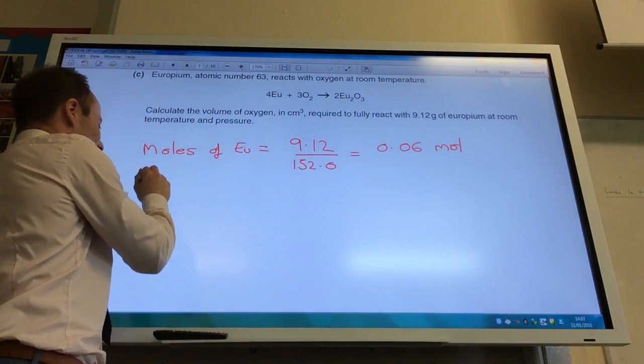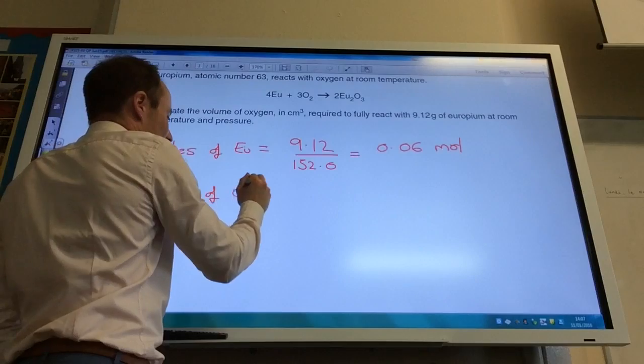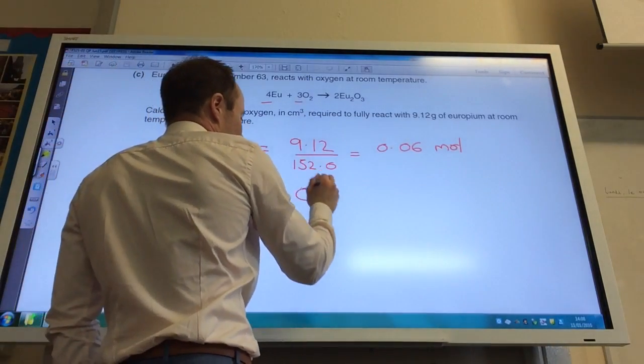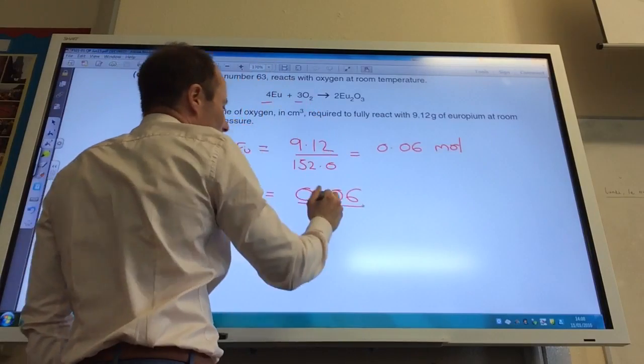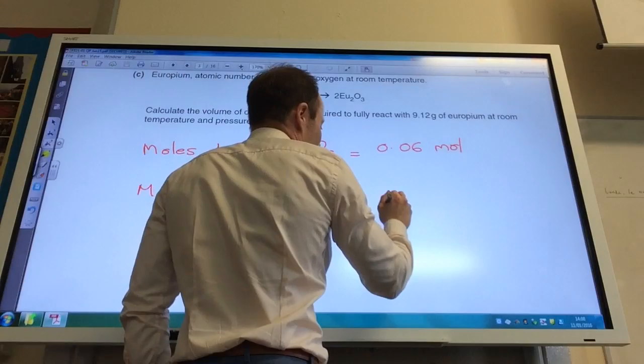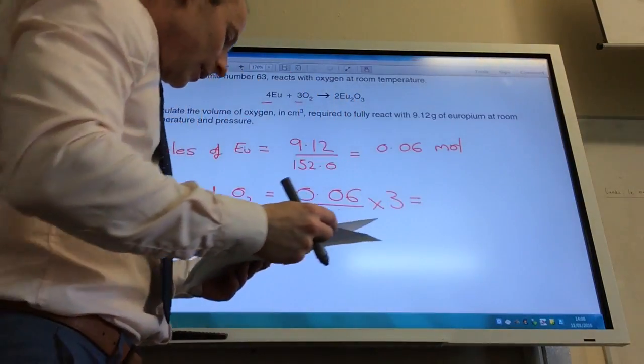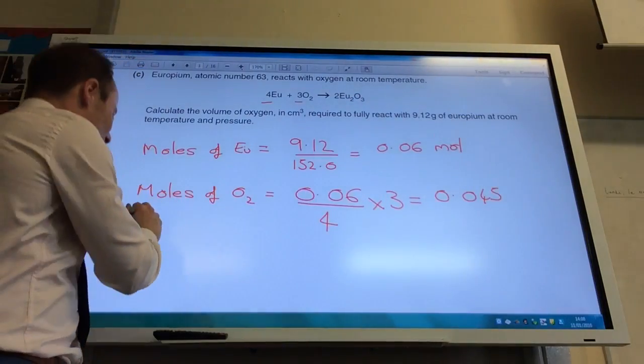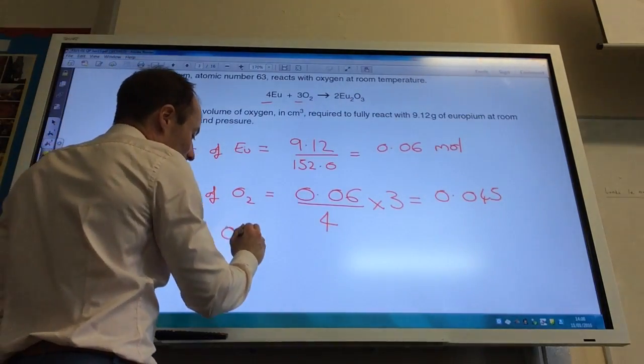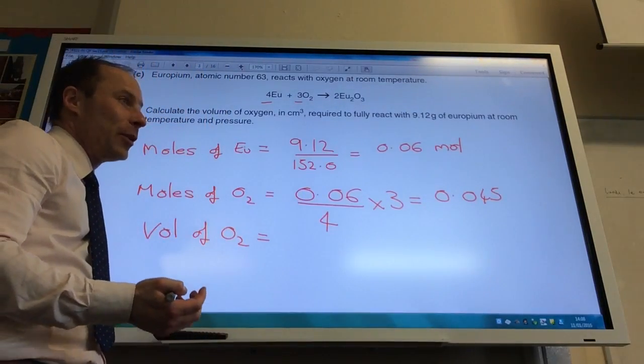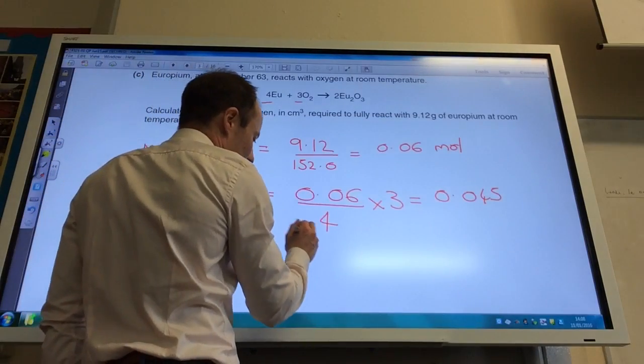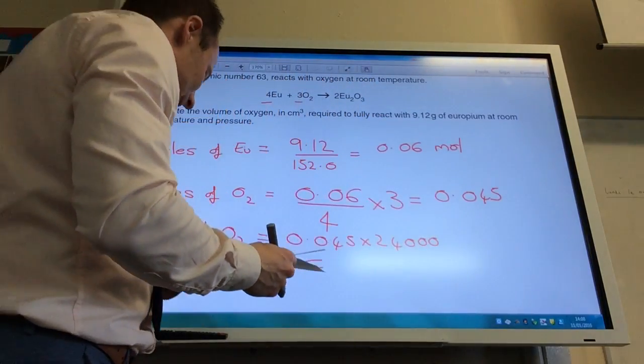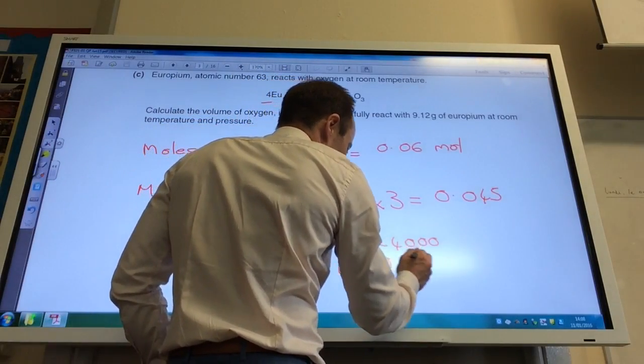We've got to now convert that into moles of oxygen. If you look at your equation, for every 4 europiums, you need 3 oxygens. The way to do it is you divide by 4, the big number of the moles you've just worked out, times it by the moles of the thing you want to find. Divide by 4, times by 3, 0.045 moles. Now I need to convert that into a volume of O2. The volume is moles times 24,000 to get it into centimeters cubed. That gives you 1,080 centimeters cubed.